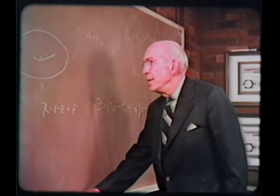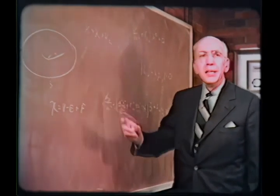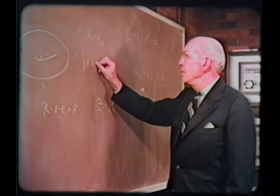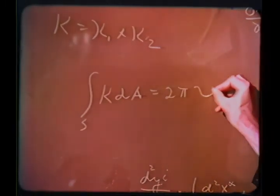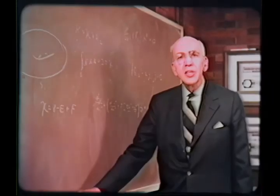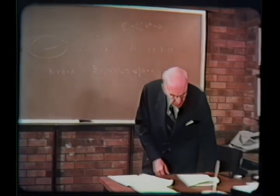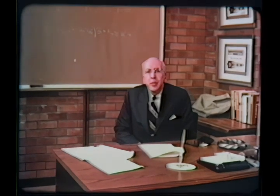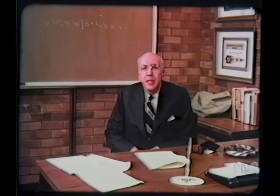To recapitulate: let S be any two-sided closed surface and K its curvature. Then the integral of K with respect to area over the surface S is equal to 2 pi times the Euler characteristic chi of the surface. This is the Gauss-Bonnet theorem. This remarkable connection between the differential geometry and the topology of a surface is also true in higher dimensional spaces, and has been the inspiration for a large body of mathematical research in the last 40 years.